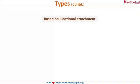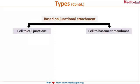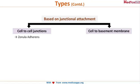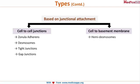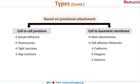Junctions are further classified based on junctional attachment — whether it is cell-to-cell or cell-to-basement membrane. Cell-to-cell junctions include zonula adherens, desmosomes, tight junctions, and gap junctions. Junctions that bind cells to the basement membrane include hemidesmosomes, cell adhesion molecules, cadherins, integrins, and selectins.